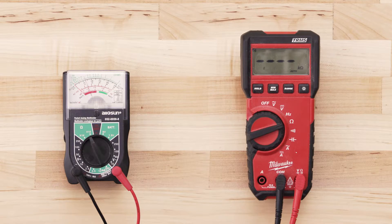If the element has continuity, your multimeter should read anywhere from zero to 50 ohms.